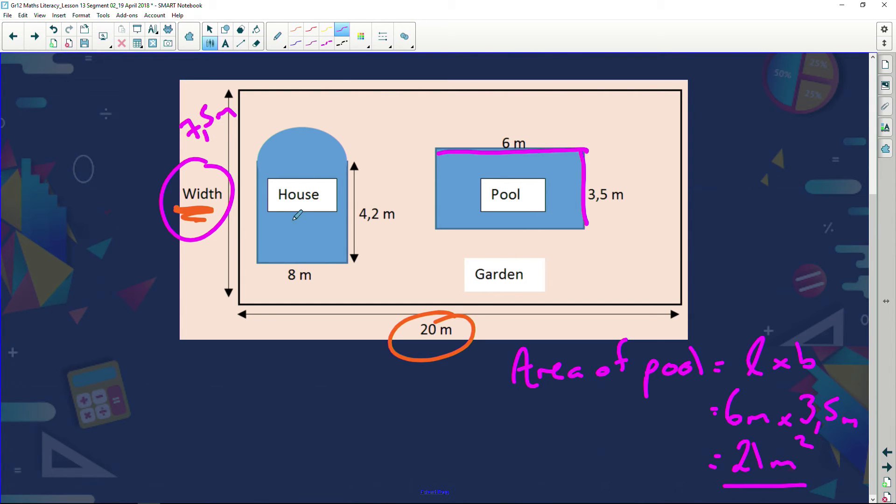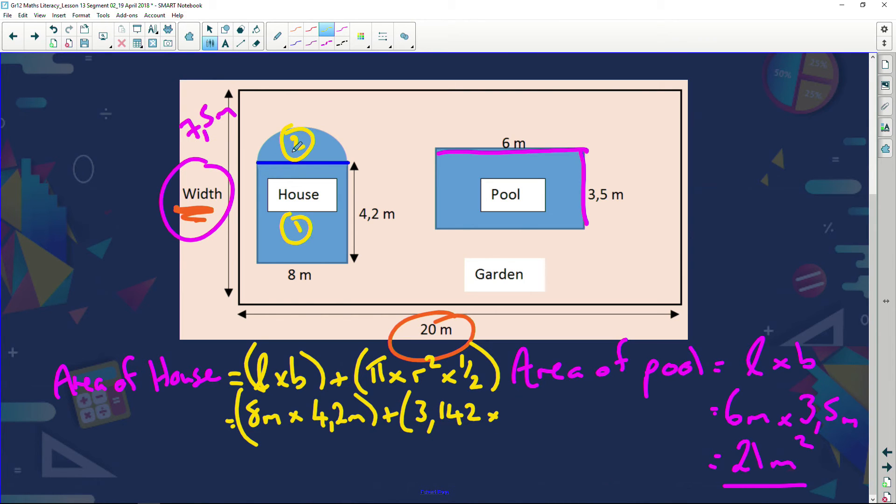Now let's find the area of our house. So the area of the house is a little more complicated because I've got two different shapes in my house. Let's have a look here quickly. I have a little rectangle and I have a semicircle. Now the rectangle is easy. It's length times breadth. But I have to add the semicircle. And the semicircle, area of a circle, is pi times r squared times a half. Because it's half a circle. The length of my house is 8 meters. The breadth of my house is 4.2 meters. Plus pi, we know it's 3.142. Now what is the radius of the circle?